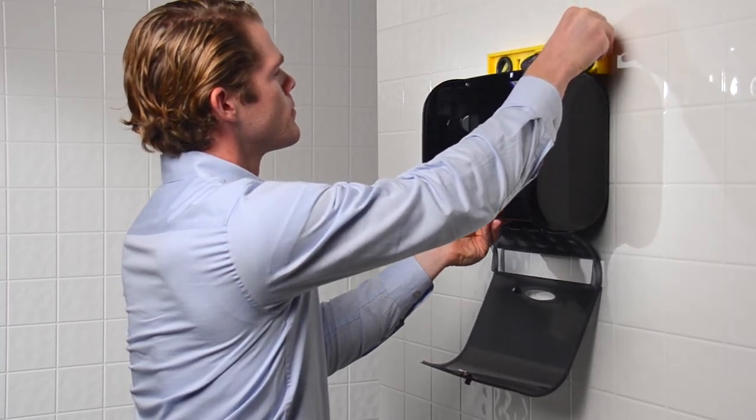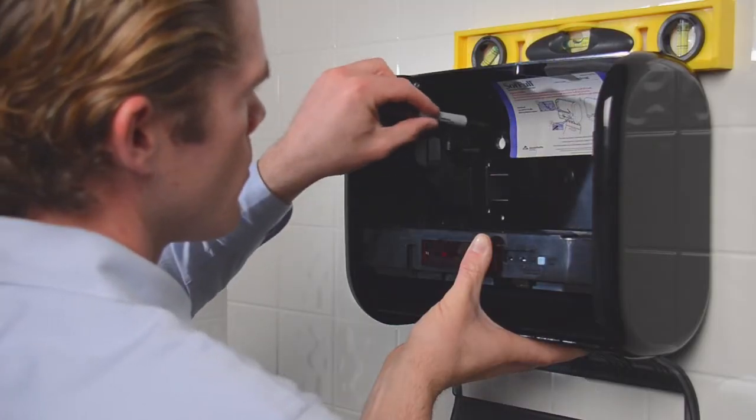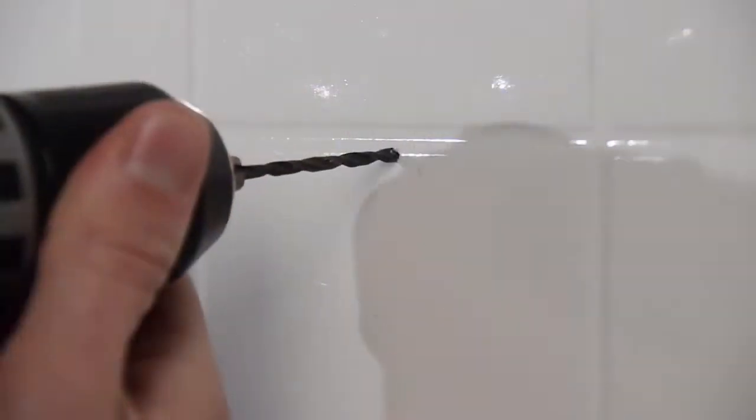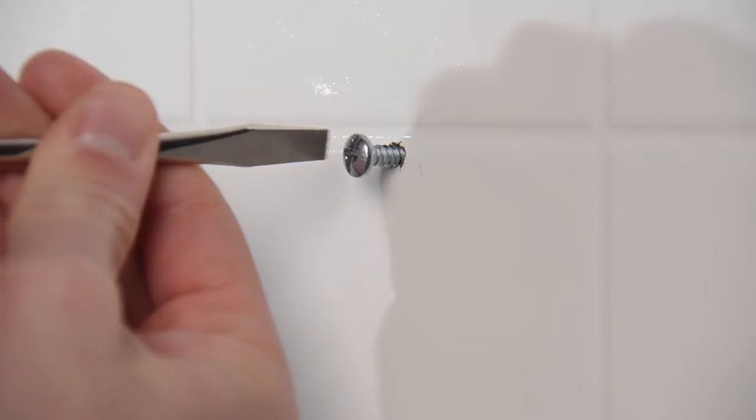When you are ready to position the dispenser, mark the holes in the wall where it will be placed. Next, drill the holes for the appropriate wall anchors and screws.